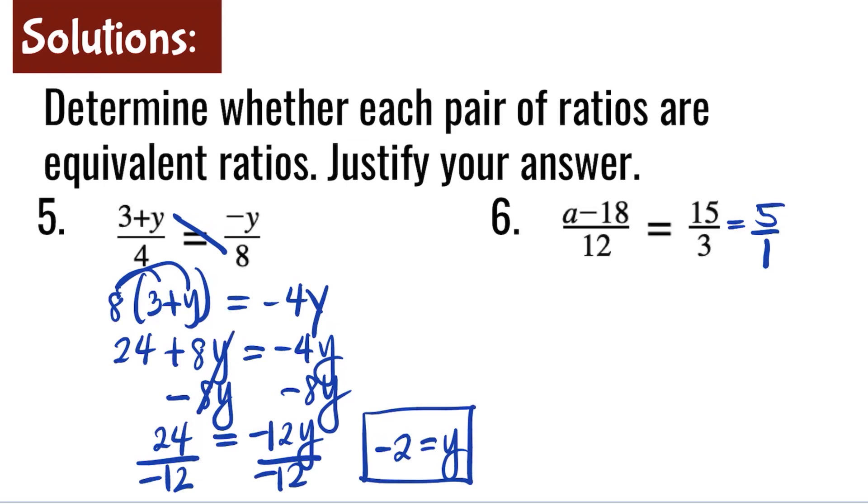We will multiply a minus 18 times 1. So that is a minus 18. Next, we need to multiply 12 times 5. And that is 60.